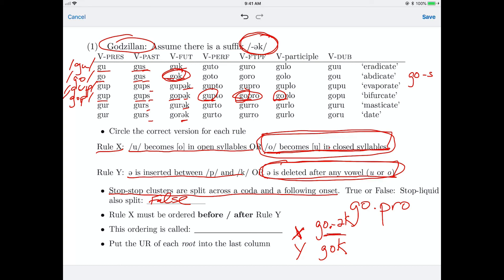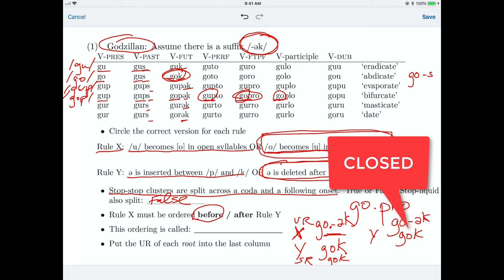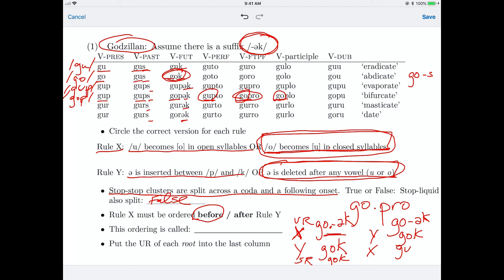So we have an o in a closed syllable that hasn't turned into u because of the rule ordering. Okay? So what are we going to call this ordering? So rule x has to come before rule y. Imagine what had happened. And so what would have happened? Here's our surface representation. G-O-K. What would have happened if the order had been reversed? If we had the same underlying form, G-O-schwa-K, if we had first done rule y, then we would have G-O-K.